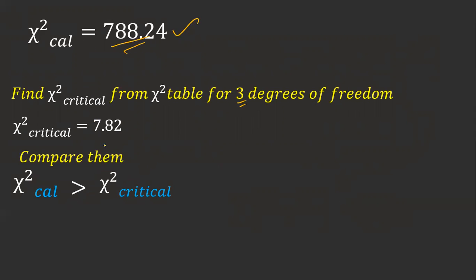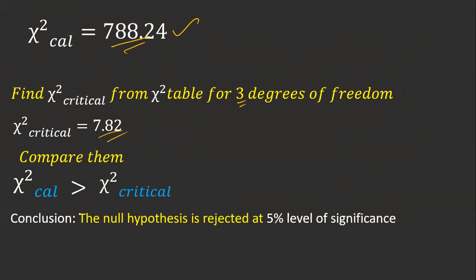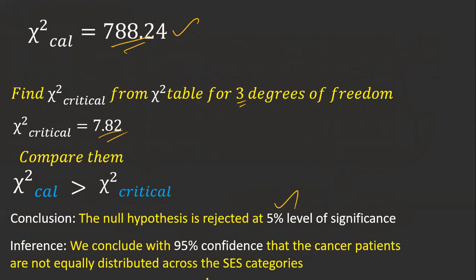Since 788.24 > 7.82, the null hypothesis is rejected at the 5% level of significance. We conclude at 95% confidence that cancer patients are not equally distributed across the SES categories. This is how we calculate the chi-square goodness of fit.